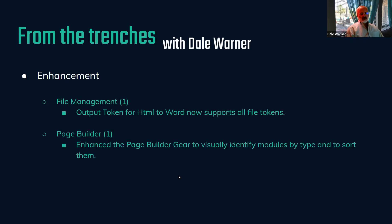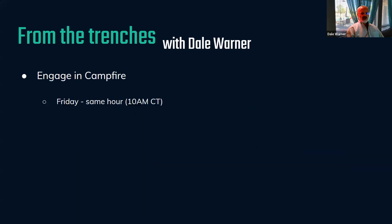Two enhancements: In our file management, the output token for the HTML to Word action now supports all the different file tokens — that's an improvement. And in our page builder theme — this was a suggestion from our community, our Campfire community — the page builder gear icon now visually identifies what kind of thing you're about to edit. You'll also be able to open items in a new page from that icon. A couple of handy developer experience improvements.